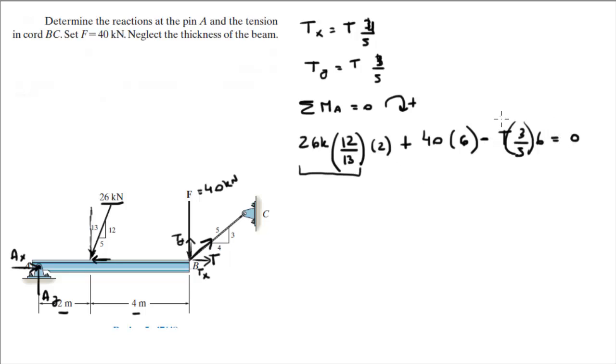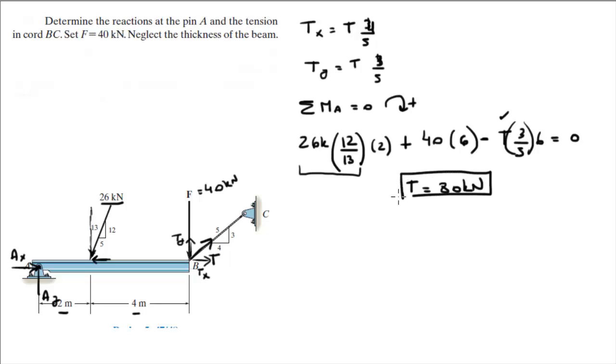As you can see, the only unknown is the tension, so we solve for it and get that the tension T is equal to 80 kN.